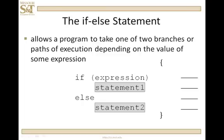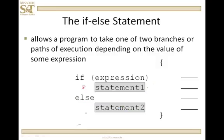So how does this work? It's very simple. If the expression comes out to be true, then statement one is going to be executed and the else is ignored. Control then passes down to whatever statements follow the if-else. If the expression is false, then statement two is executed and statement one is ignored.